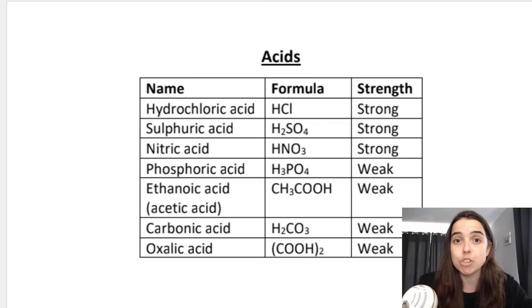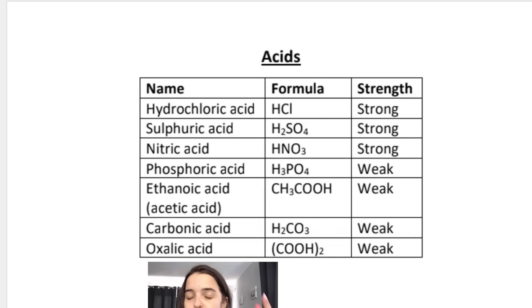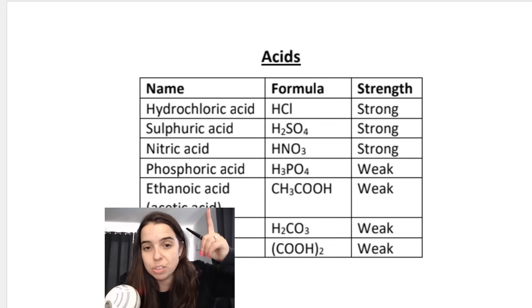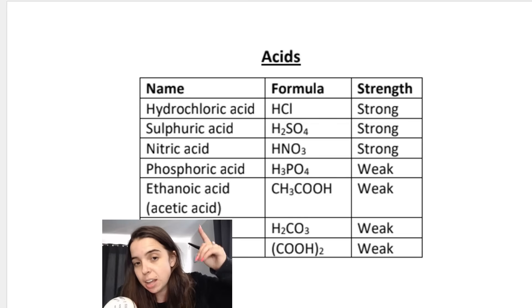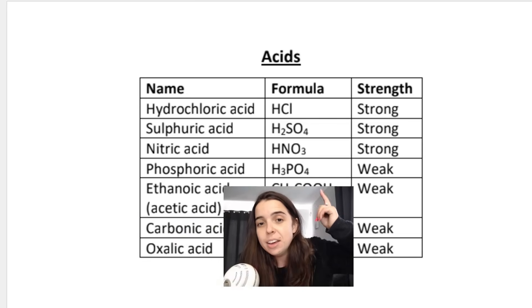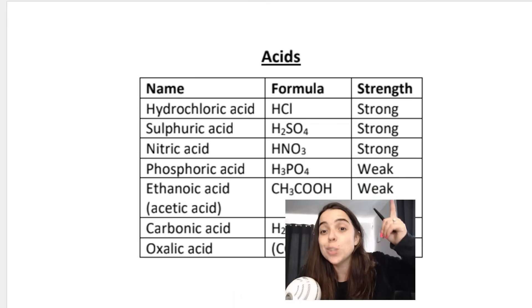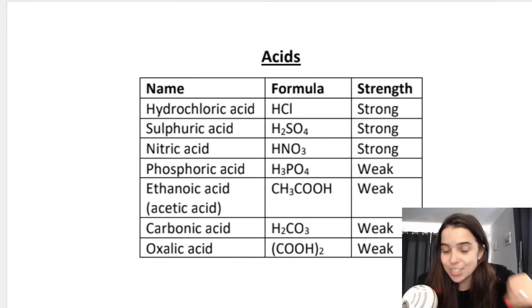So this is a table summarizing some common acids. For example, if I say hydrochloric acid in a test, you need to know that it's HCl and it's strong. You need to know sulfuric acid, H2SO4, is a strong acid. We will often also speak about acetic acid or ethanoic acid, the acid in vinegar, with formula CH3COOH, and it's a weak acid. You need to know this list, study it off by heart.